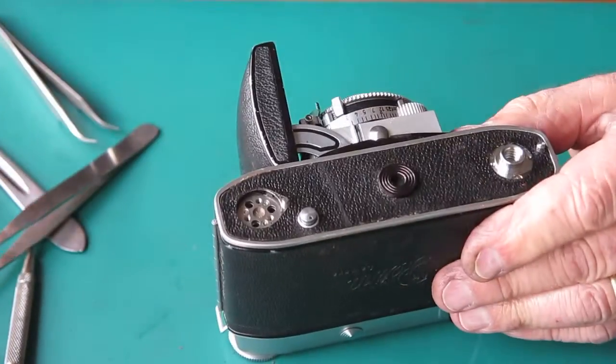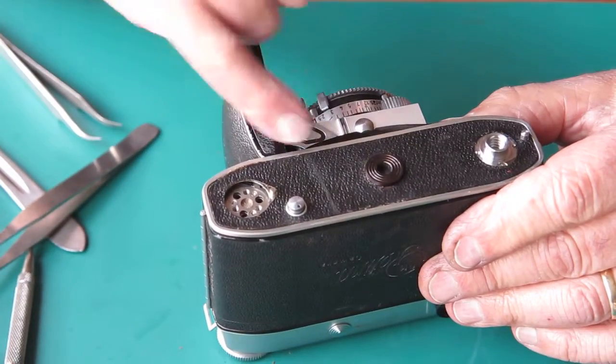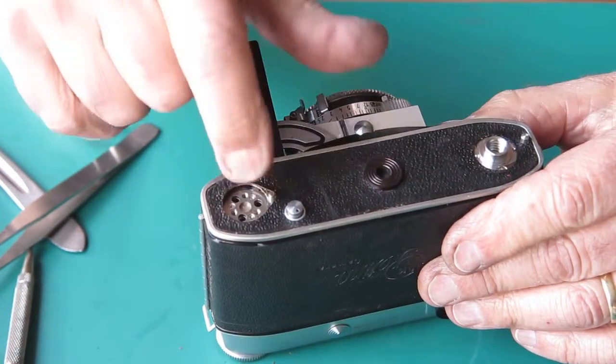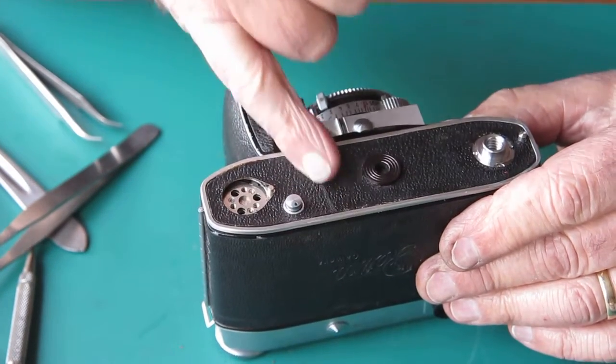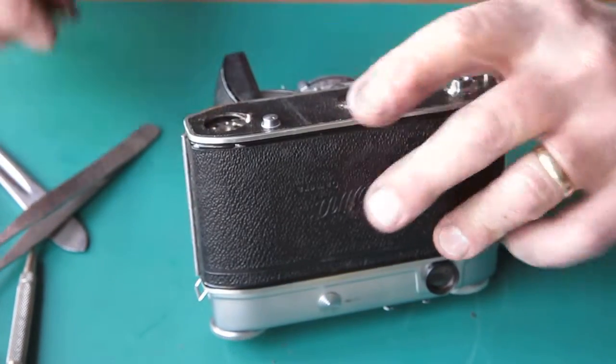Now this leatherette, whatever camera it had come off, somebody had peeled it back just far enough to get this plate off the camera they were working on. As a result, there was like a fold in the leatherette at that point.